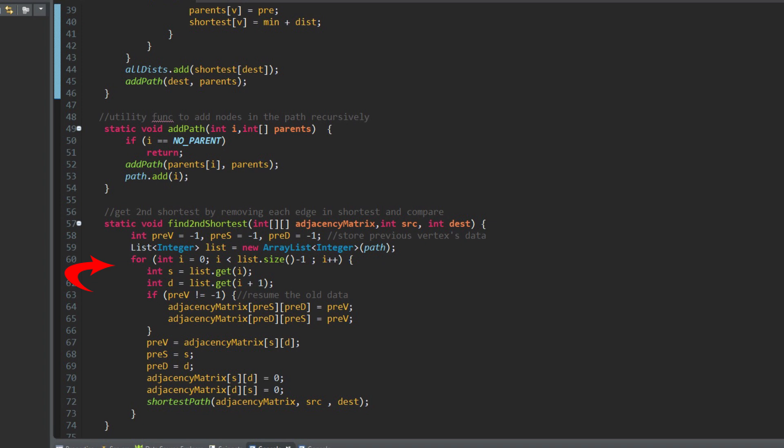Inside the find second shortest function, we loop through each vertex in the shortest path. We get the pair of source and distance. After saving the value for future restore, we remove the edge between source and distance by setting that value to be 0. Then call shortest path to recalculate. When all vertices in the path have been executed, the second shortest distance will be found and saved to the return set.